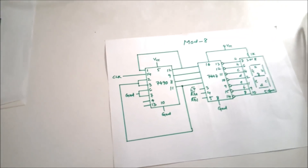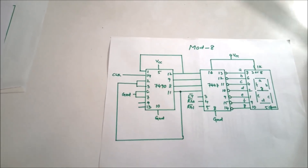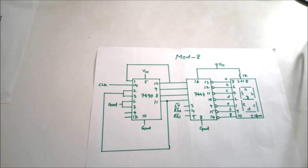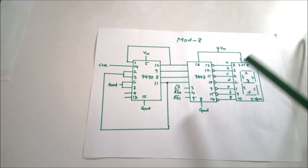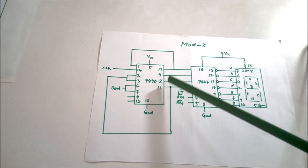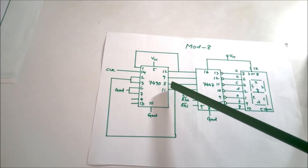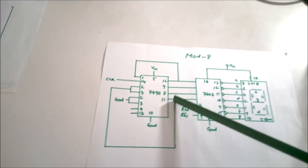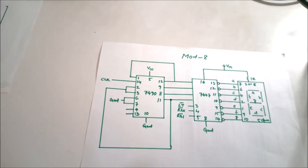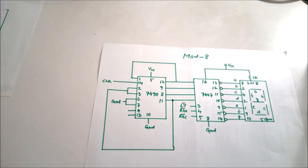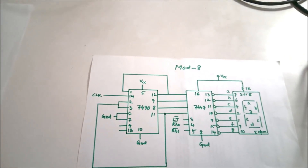What we want to do is: we do not want to display 8, that means 1, 0, 0, 0. We want to reset it to 0 after 7. After 7 we want to reset. Therefore, when it displays 1000, pin number 11 will become high, and we are giving that to pins 2 and 3. As soon as pins 2 and 3 get the high signal, all the flip-flops will become reset.